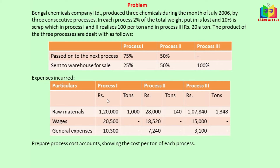The expenses incurred were given: for process 1 we have raw materials, wages, and general expenses, and similarly for process 2 and process 3. For every process we have an input of materials — for process 1, 1000 tons; for process 2, 140 tons; and for process 3, 1348 tons. We need to prepare a process cost account showing the cost per ton of each process.